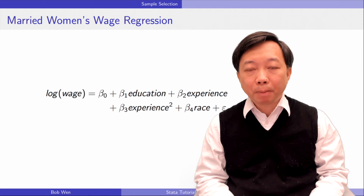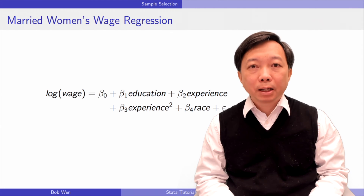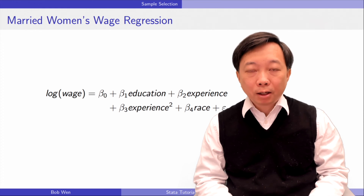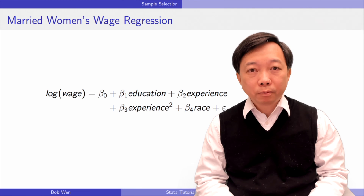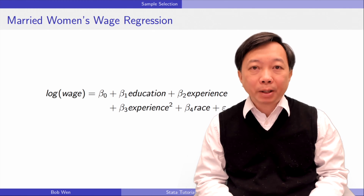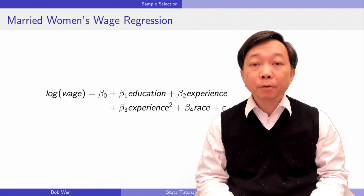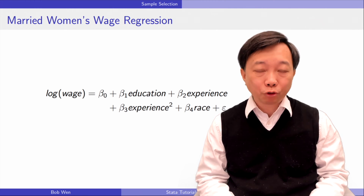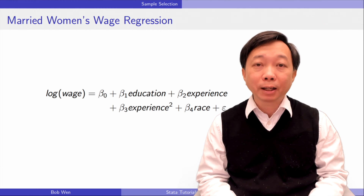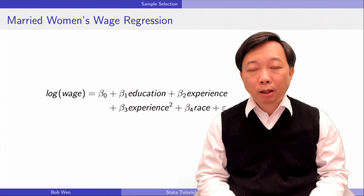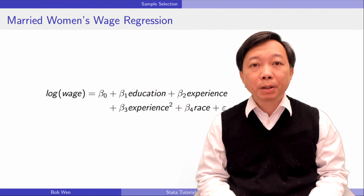Would the selected sample bias the OLS estimates? If we are only interested in the return to education for employed women, then the OLS estimate is okay. On the other hand, if we want to make inferences about the relationship between wages and education for all women of prime working age, including the employed and the unemployed, then the estimates could be biased.